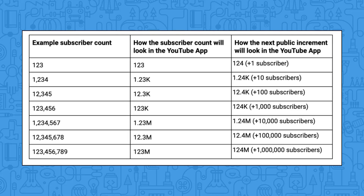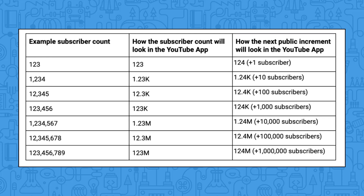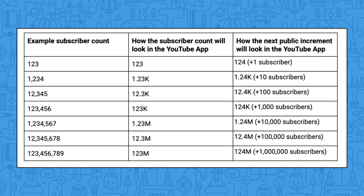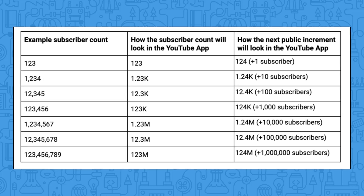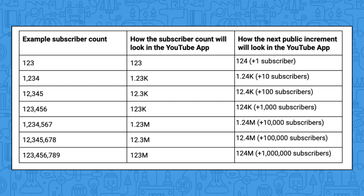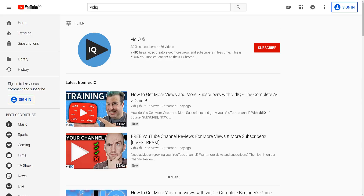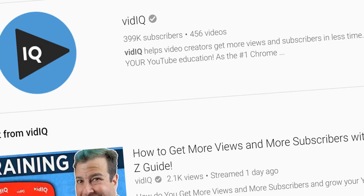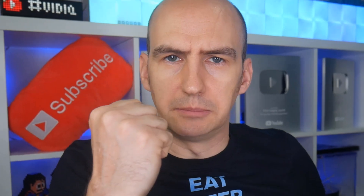For channels over 10 million subscribers, like MrBeast, it abbreviates every 100,000 subscribers. For channels over 100,000 subscribers, it's every thousand. Hence the reason we currently sit on 399,000 subscribers. Damn you, YouTube.